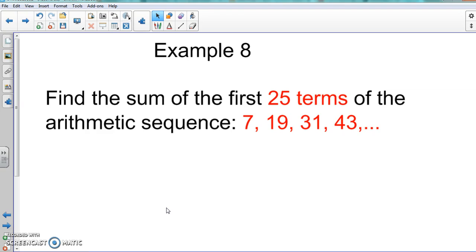So with this one, we're going to find the sum of the first 25 terms of the arithmetic sequence: 7, 19, 31, 43. Now what is the difference between this example and the previous example?